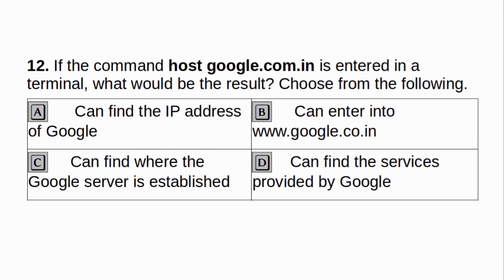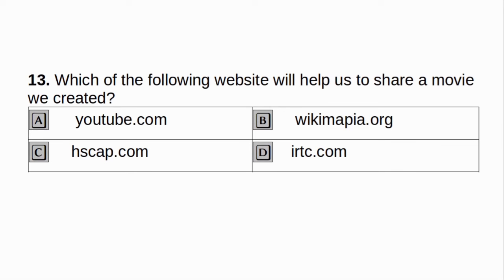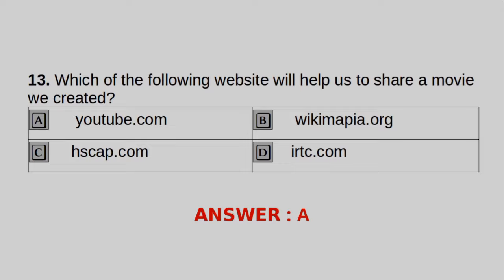If the command host google.com is entered in a terminal, what would be the result? A. Can find the IP address of Google. B. Can enter into www.google.com. C. Can find where the Google server is established. D. Can find the service provided by Google. Answer: A. Can find the IP address of Google. Which of the following website will help us to share a movie we created? A. YouTube.com. B. Wikimapia.org. C. HSCAP.com. D. IRCTC.com. Answer: A. YouTube.com.